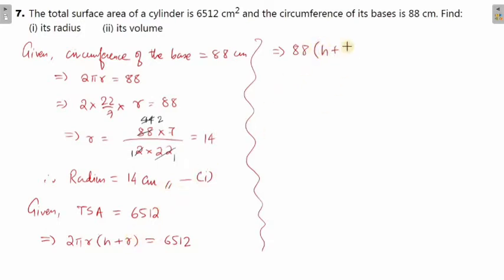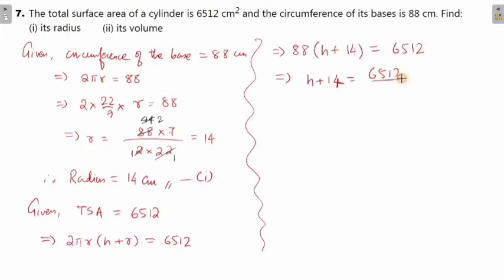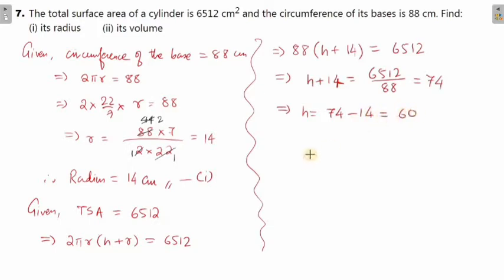What is r? r is 14. So we get 88(h + 14) = 6512. Bringing 88 to the denominator: 6512 divided by 88 gives 74. So h + 14 = 74, which means h = 74 − 14 = 60. So the height turns out to be 60 centimeter.